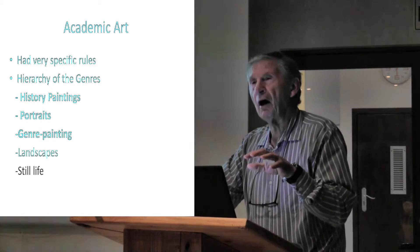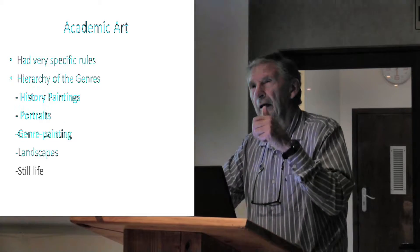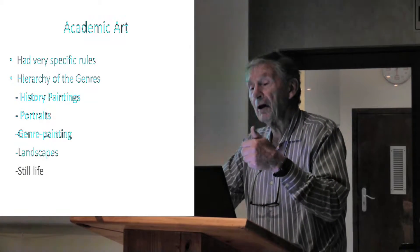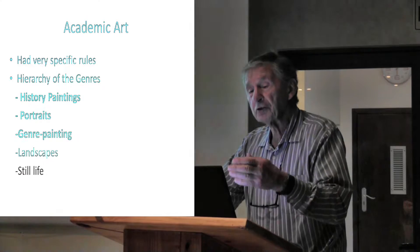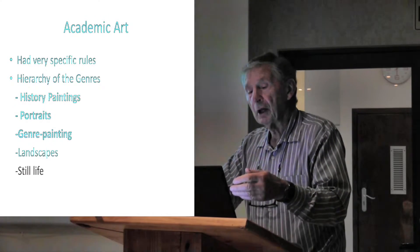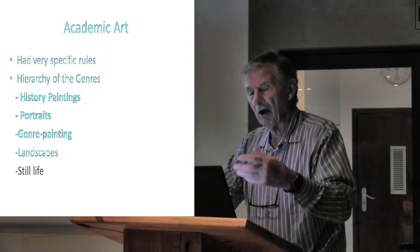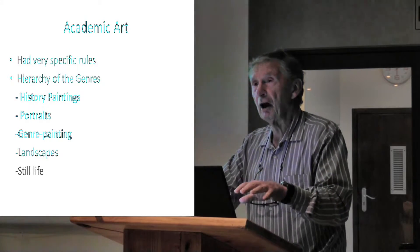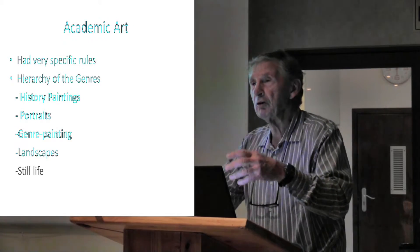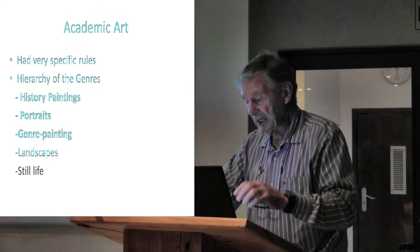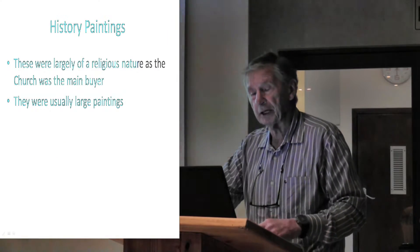What they also had was the hierarchy of genres. The hierarchy of genres means that certain paintings were allowed to be exhibited, particularly if they were large — the history paintings, portraits, and the so-called genre paintings. Genre paintings were paintings of everyday life. Landscapes and still life were regarded as taboo — you could sell them to your friends, but you couldn't sell them anywhere else.